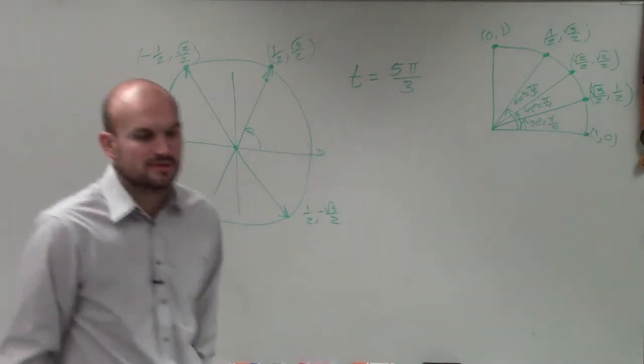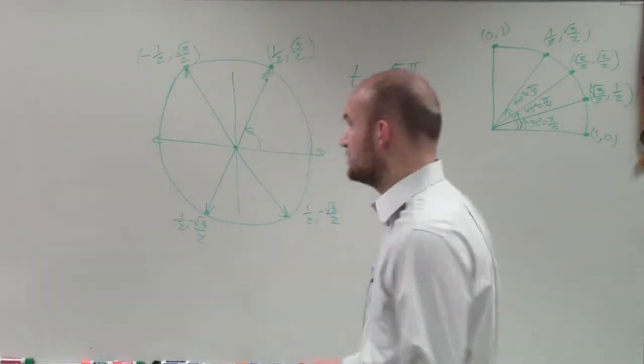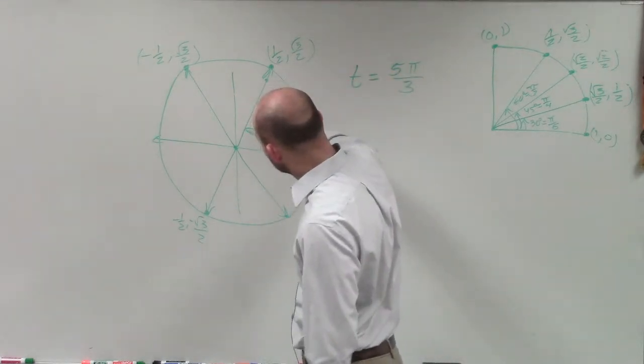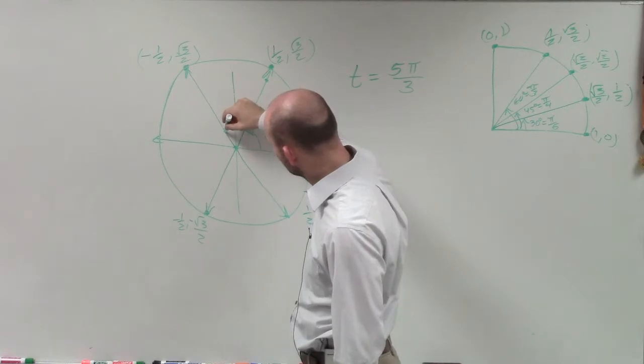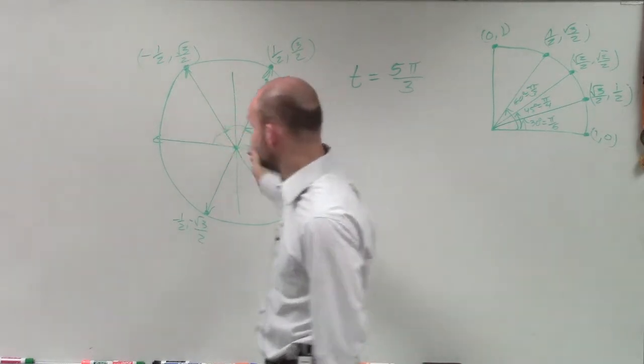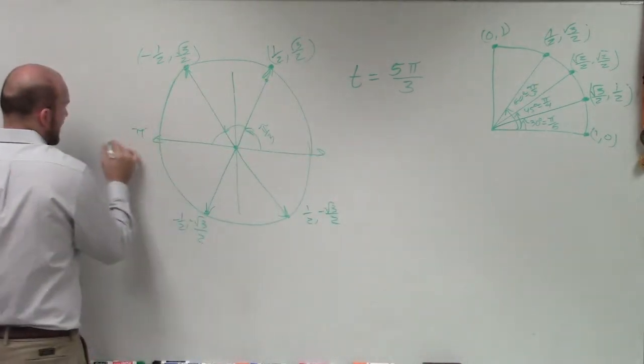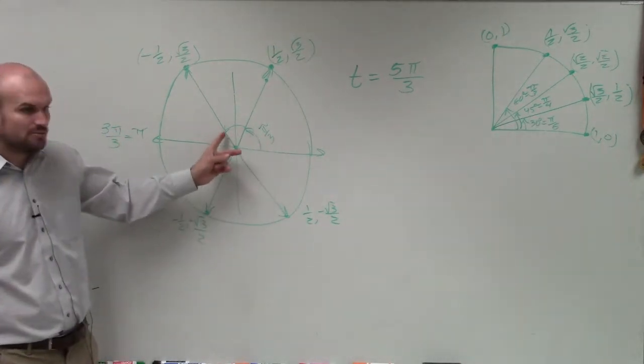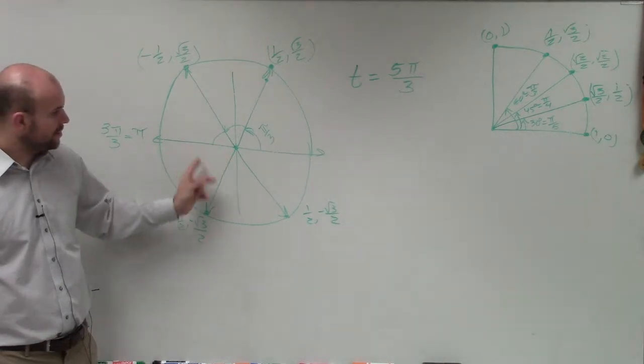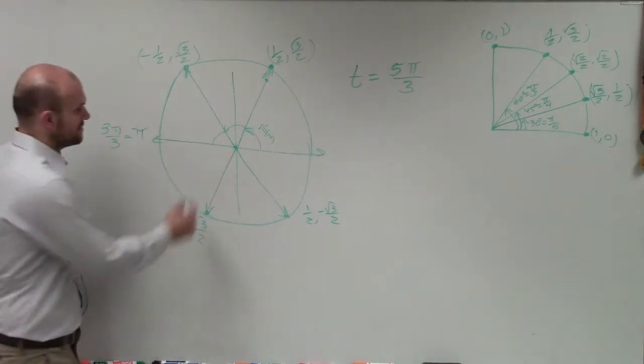So if we're going to graph what these points are, well, if this is π thirds, then this is 2π thirds, 3π thirds, right? Because you know halfway around a circle needs to be π. So it also needs to be 3π over 3. So that's π thirds, 2π thirds, 3π thirds, 4π thirds, 5π thirds.